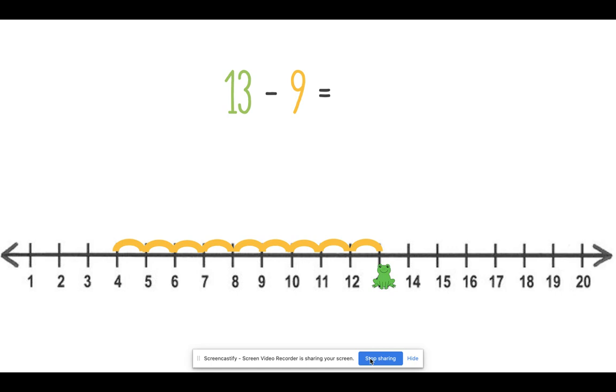See what number he landed on? All right. Let's get him to start jumping. 1, 2, 3, 4, 5, 6, 7, 8, 9. He stopped at the number 4 because 13 minus 9 equals 4. Good job.